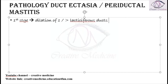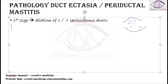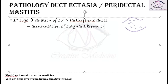Whenever there is dilatation of these ducts, discharge gets accumulated here. As a result, there is accumulation of stagnant brown or green discharge seen in these patients, which remains in the duct.